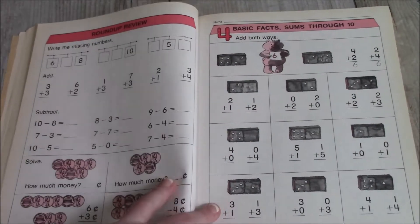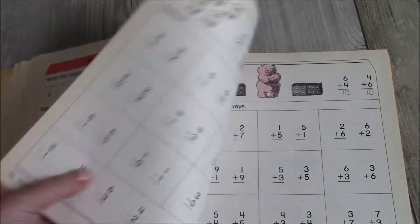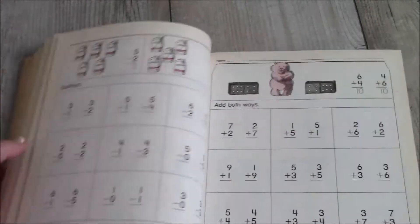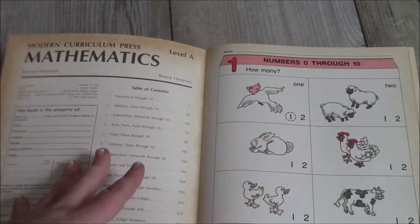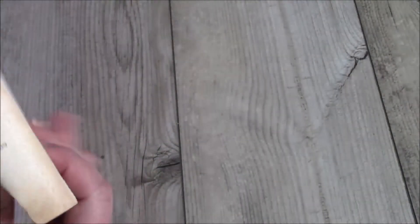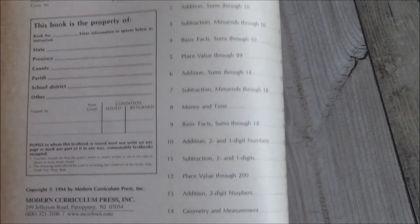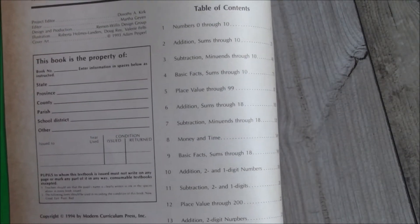And then we're going to go to chapter four, which is basic facts and sums through 10. And we're going to start memorizing these facts. Now, if I go through the whole book, each book this way, this video will be ridiculously long. So thankfully at the front, you do have a table of contents. And these are all the things that you're going to learn.